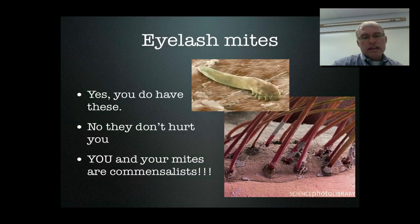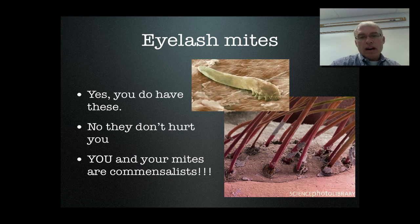Here's another example of a commensalist. In your eyelash hair follicles live these little mites. Here's a scanning electron microscope picture of one. They're very tiny. Here are the tails of a few living inside an eyelash hair follicle with the shaft of the eyelash. These little mites, as far as we know, don't cause any problems. They're living on dead skin and oils that are part of our biology. They can't live without us, but we can live without them. This is another example of commensalistic symbiosis.